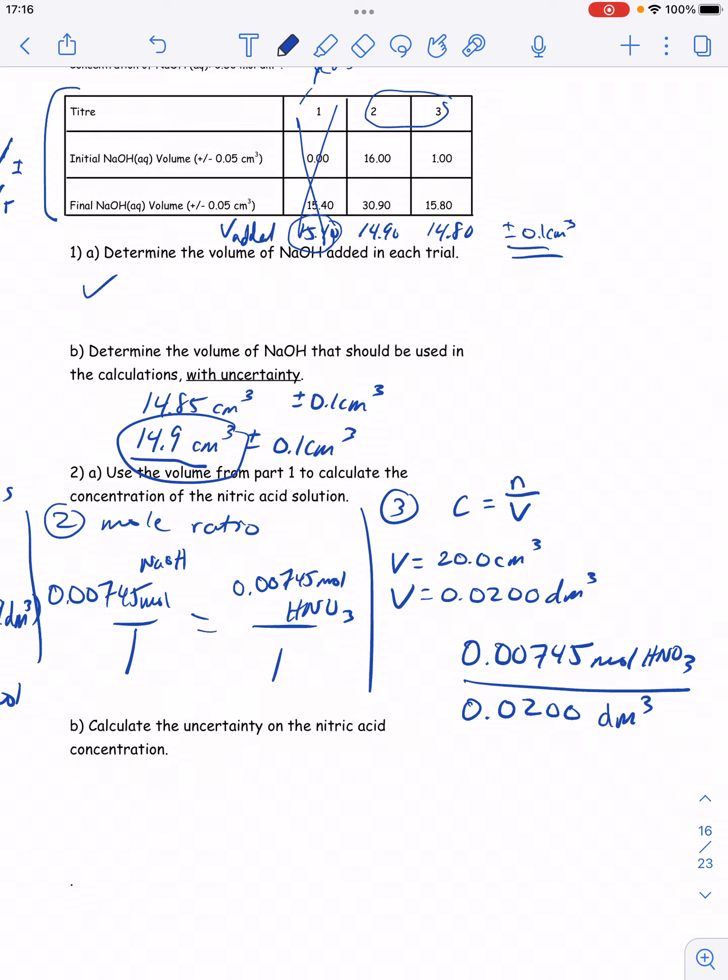I get that the concentration of this nitric acid is 0.3725. Round it off, 0.37 moles per dm cubed.